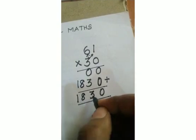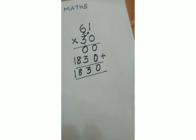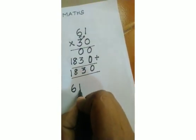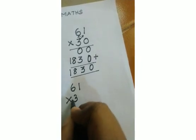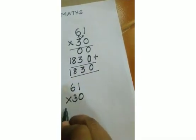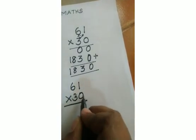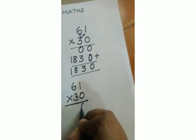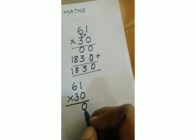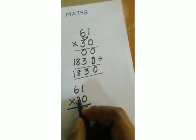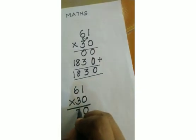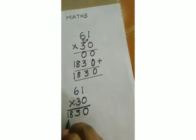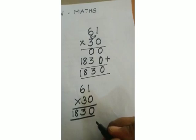The simple way: the same sum, you multiply like this. First, in the ones place you put 0, then you multiply with 3. 3 into 1 is 3, then 3 into 6 is 18. You can do it like this also.